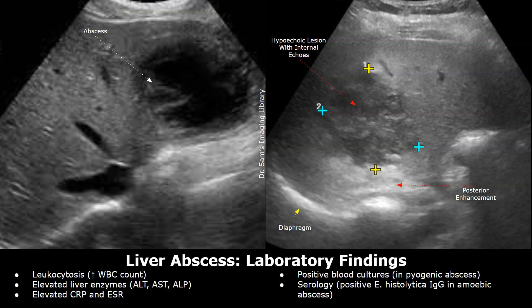Laboratory findings along with ultrasound findings are very important for diagnosis and treatment. The white blood cell count will be increased. The liver enzymes such as ALT, AST, and ALP are often elevated. The CRP and ESR are also elevated. In case of a pyogenic abscess, the blood culture will be positive. The serology test will be positive for E. histolytica IgG antibody in an amoebic abscess.